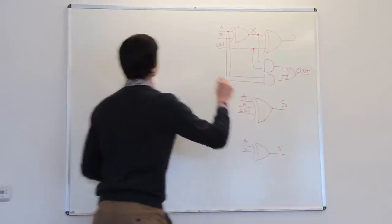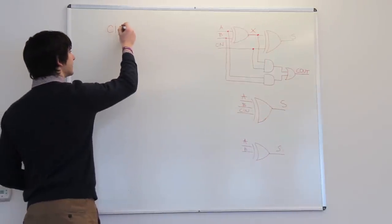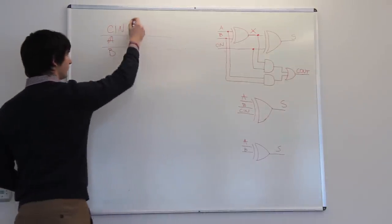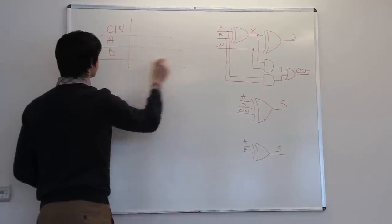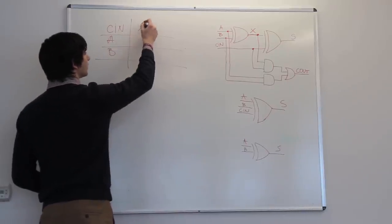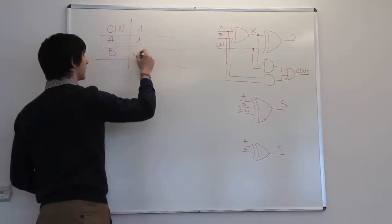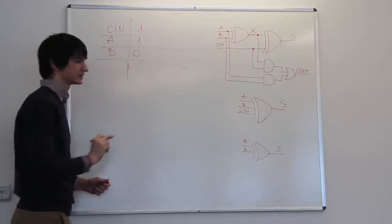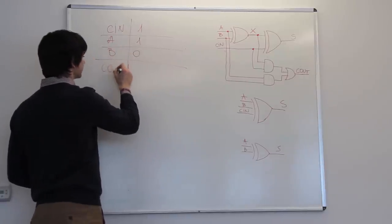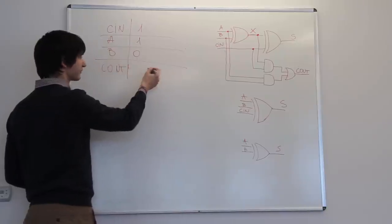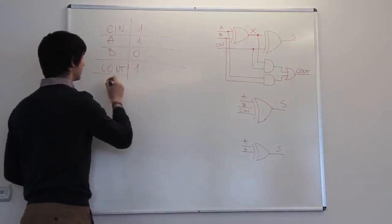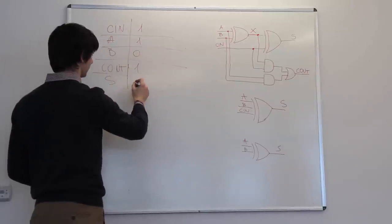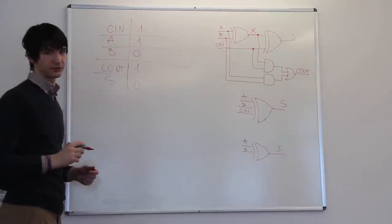then generates the carry out. So if you have a carry of one, a one, and b zero, then you would have two out of three ones, which would generate the carry, and would output a zero, because there is an even number of ones.